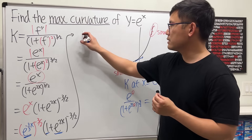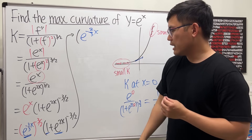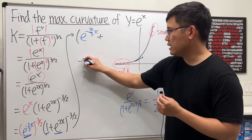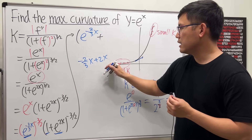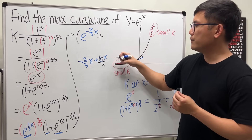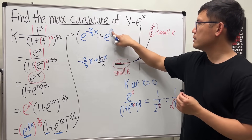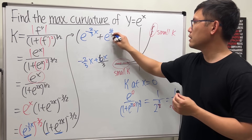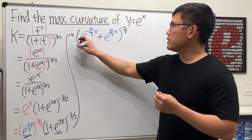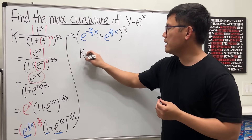Our expression becomes e to the negative 2/3 x, plus — multiplying e to the x and e to the 2x — we add exponents: negative 2/3 x plus 2x equals 4/3 x. So kappa equals e to the negative 2/3 x plus e to the 4/3 x, raised to the negative 3/2 power. Now it's time to take the derivative.